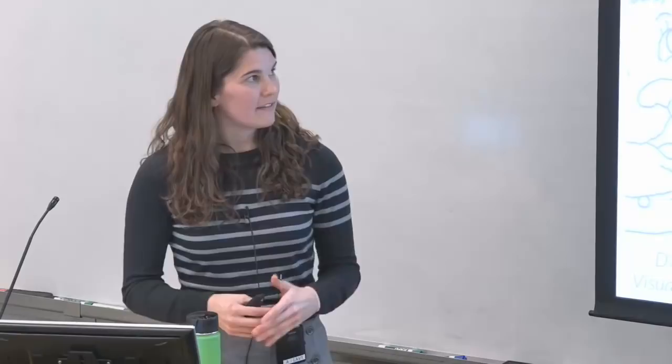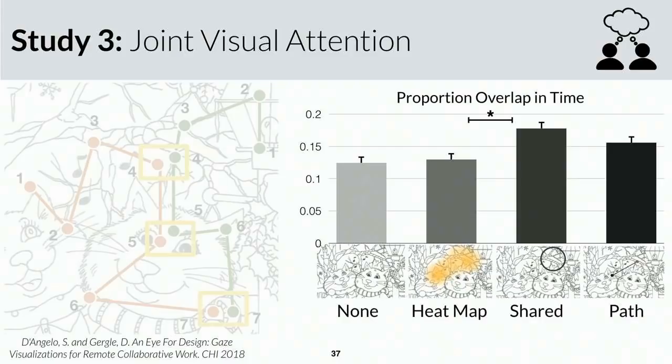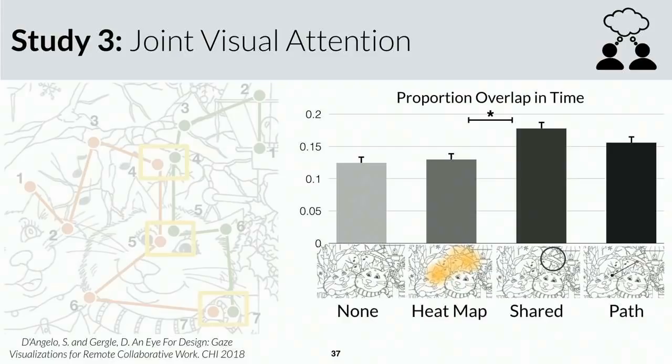We expect different visualization techniques to elicit different types of behavior supporting joint attention or not. Our measure of proportion of overlap in time — the amount of time spent looking at the same information simultaneously — shows this difference. With the shared area visualization we see significantly more overlap compared to the heat map. The shared area design encourages looking together because the only way to make use of it is if we're jointly attending. Whereas the heat map discourages that behavior — by visualizing where I'm looking in the search area, I'm starting to occlude the space, encouraging my partner to look elsewhere since they know I've already scanned that area.